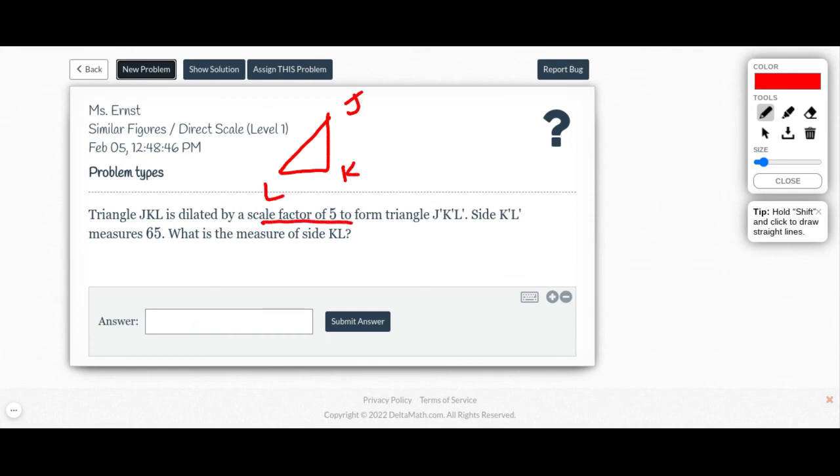And then the scale factor of 5 means I took this times 5, and I got a bigger triangle, because multiplying by 5 is going to make it bigger. So here's J prime, K prime, and L prime.